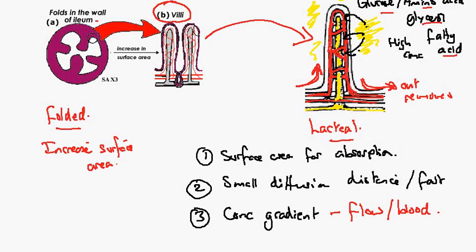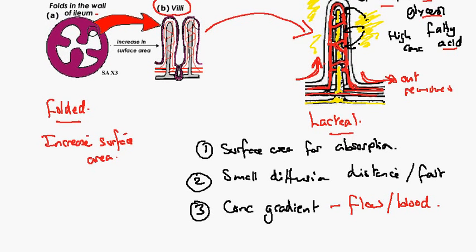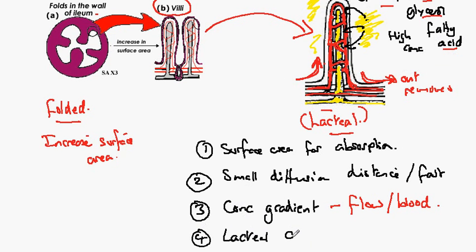The small intestine also helps with the absorption of lipid through the role of the lacteal. The lacteals collect the lipid before it's returned to the circulatory system.